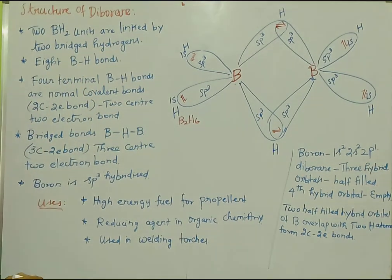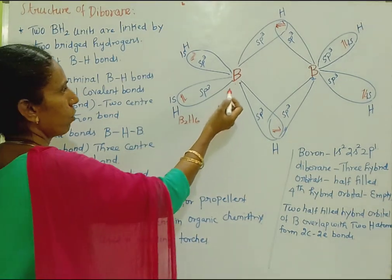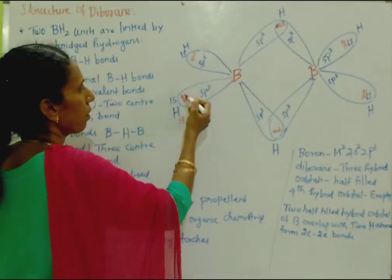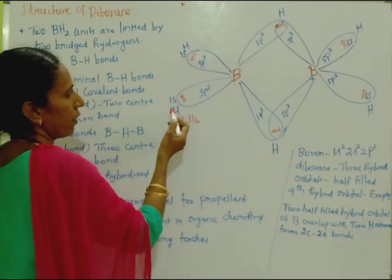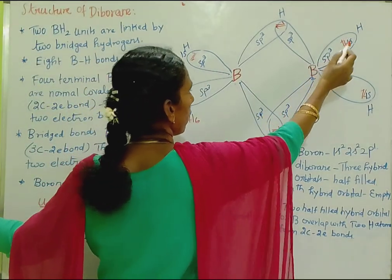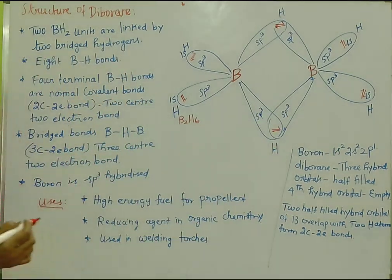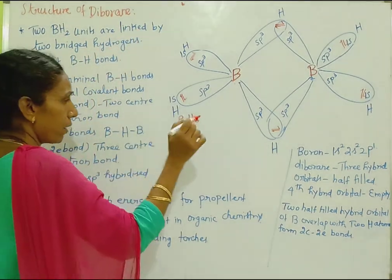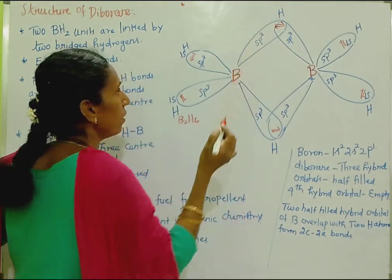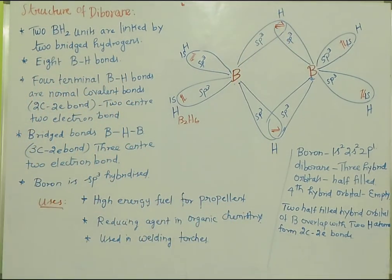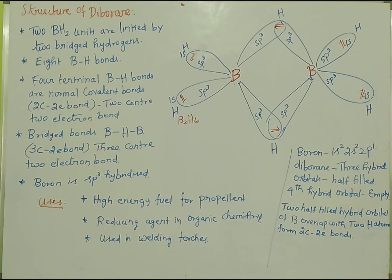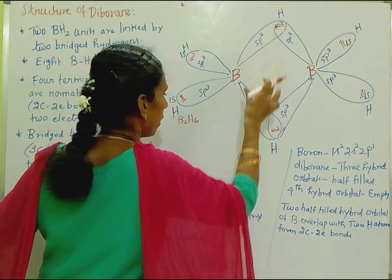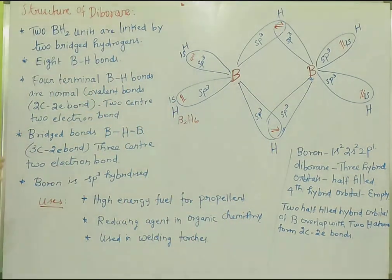We will see two BH2 units. These are BH2 — boron with hydrogen and hydrogen. This BH2 unit and this BH2 unit are linked together by two bridging hydrogens — these are the bridge hydrogens between the two BH2 units.